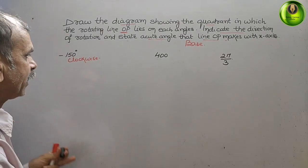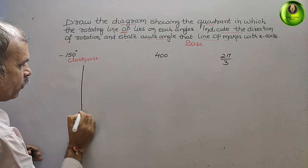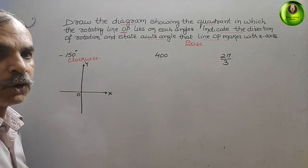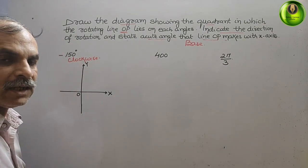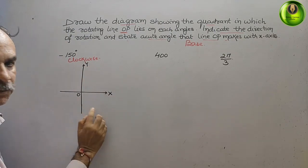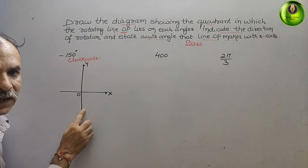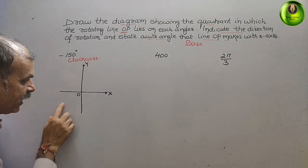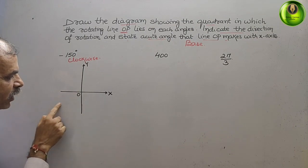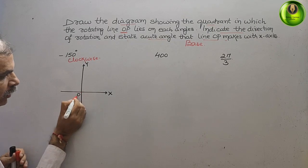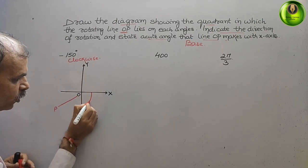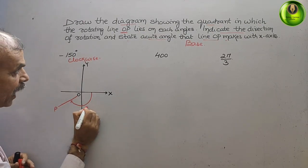Now we will draw the diagram. This is your x-axis and this is your y-axis. For minus 150, we have to go clockwise starting from the x-axis, that means from east. Going clockwise: minus 90 is here, minus 180 is here, and minus 150 will lie somewhat between those — so line OP goes from O to P at this angle, which is minus 150 degrees.